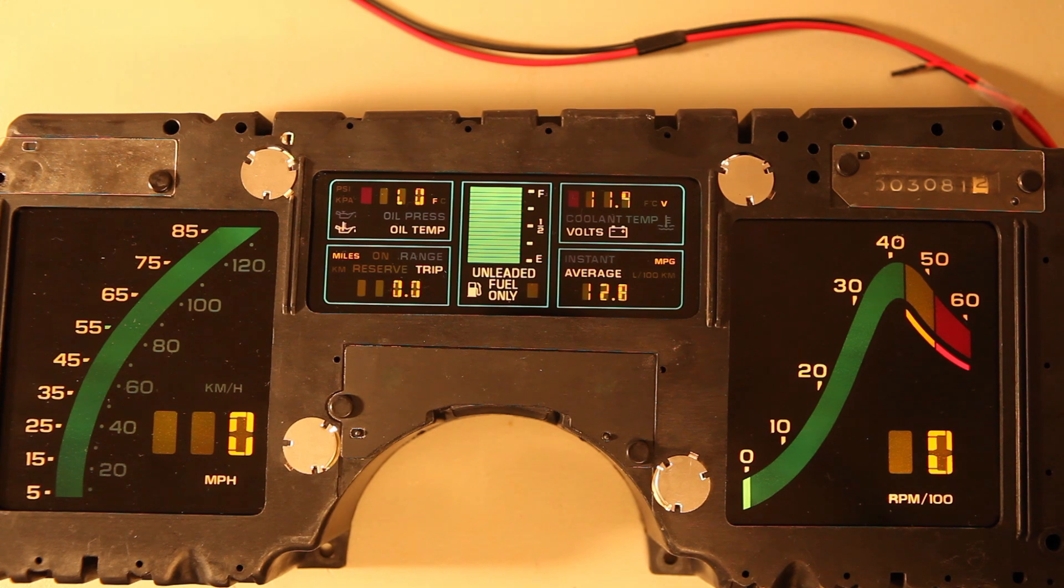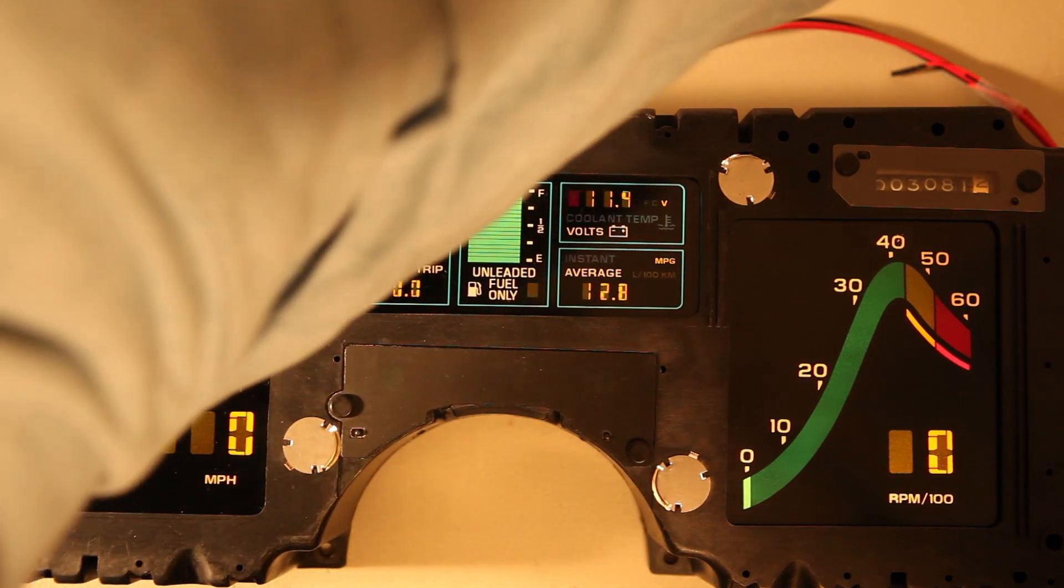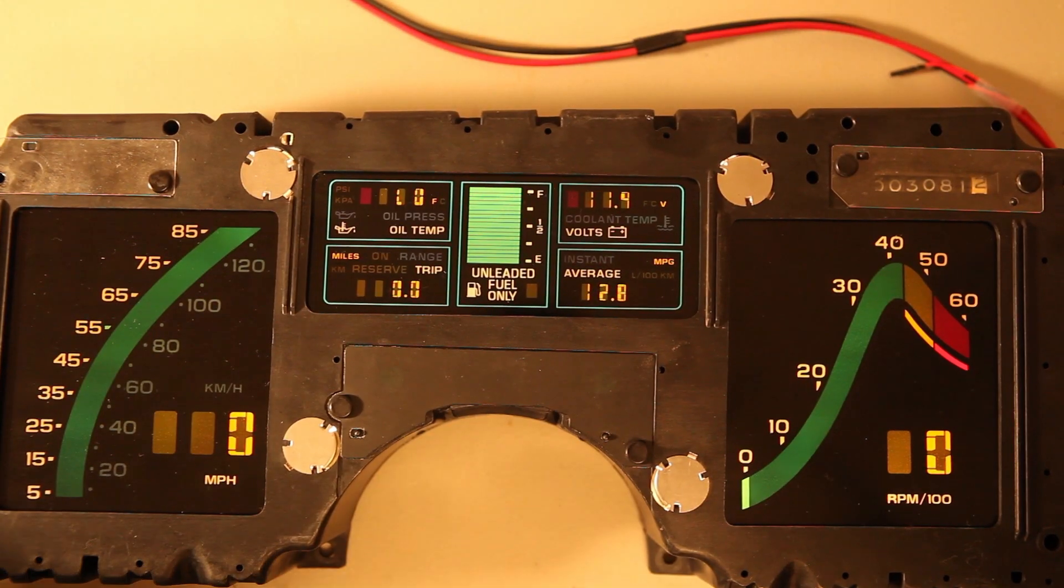Next we'll test the function of the gauges. To do this I'm using a signal generator set to a 400 Hz sine wave at approximately one volt peak amplitude. The signal generator is connected to pins C15 and C5, and this feeds a tachometer signal to the cluster.